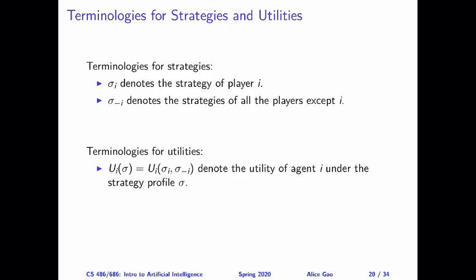To describe the concept of dominant strategy equilibrium, let me introduce some notation first. We are going to use the index i to represent a player, so the strategy of player i would be denoted as σ_i. When we're talking about an equilibrium concept, it's often useful to represent the strategy of all the players except i. So we're going to use σ₋ᵢ to represent the set of strategies of all the players except player i.